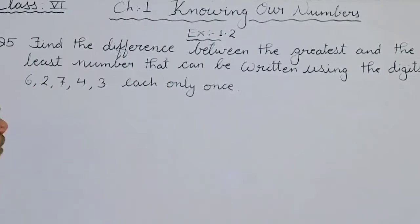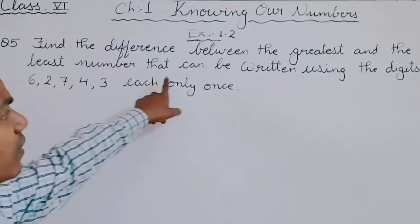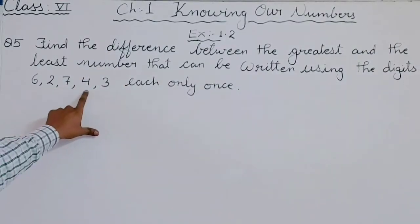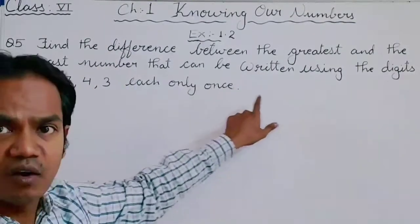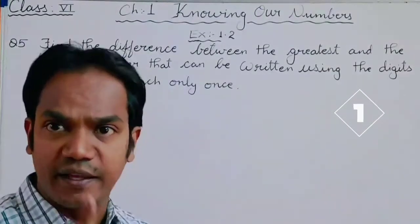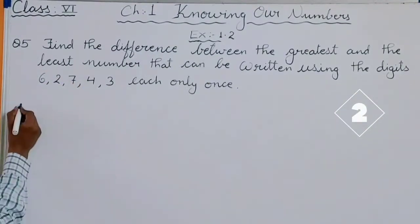Now question number 5. Find the difference between the greatest and the least number that can be written using the digits 6, 2, 7, 4, 3 each only once. Here you have to form two numbers: one, the greatest number and second, the least number.